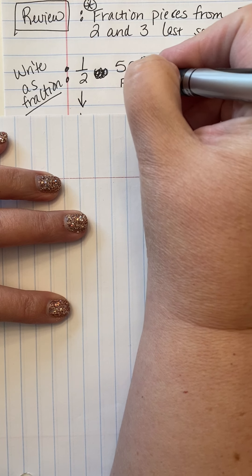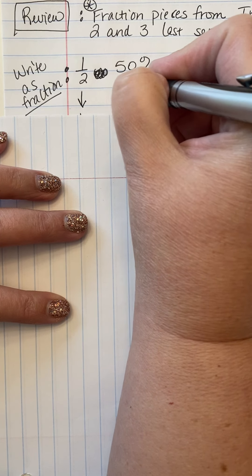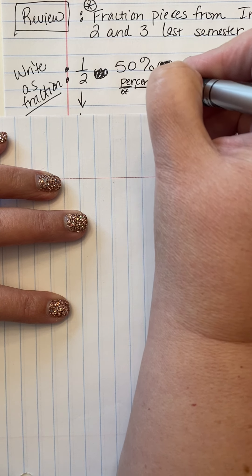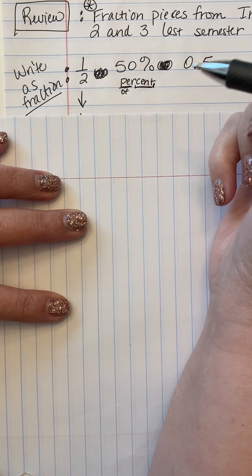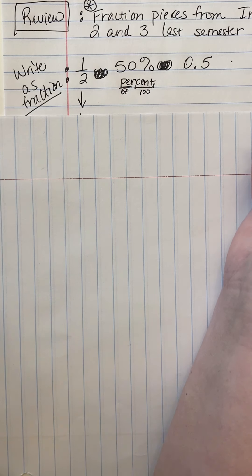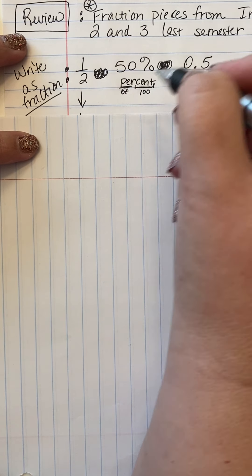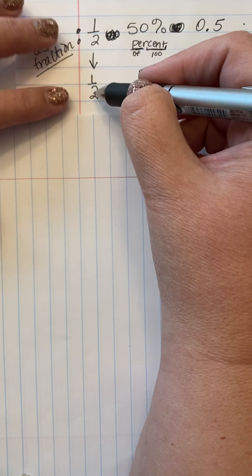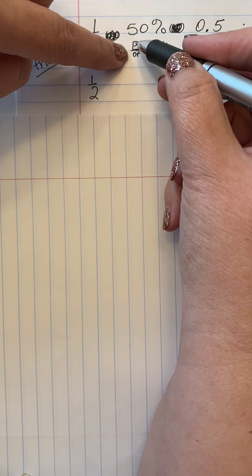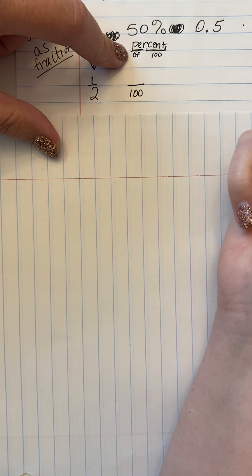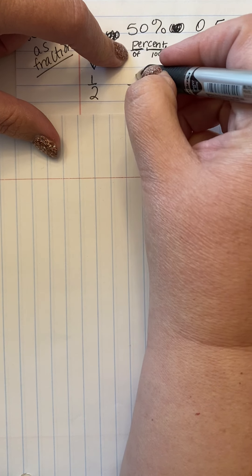When we look at the word percent, 'per' means 'of,' and remember when we see 'c-e-n-t' we think of pennies and centuries, and know that that means 100. So any percent is written as a fraction. The denominator on your fraction for a percent is always going to be 100, and the numerator is the percent number — so 50 percent is 50 over 100.